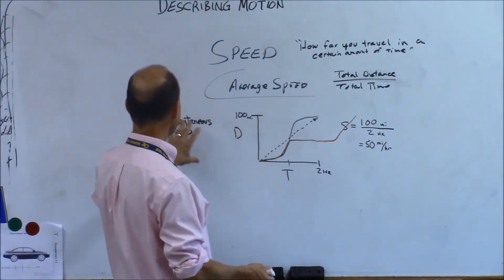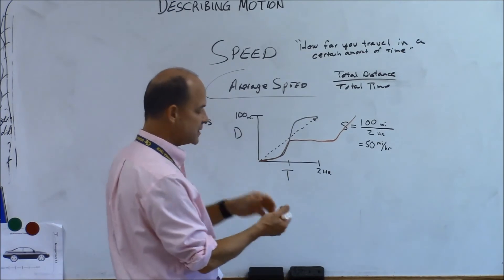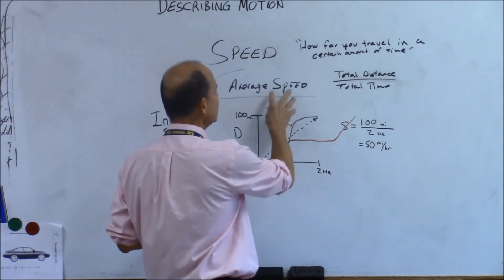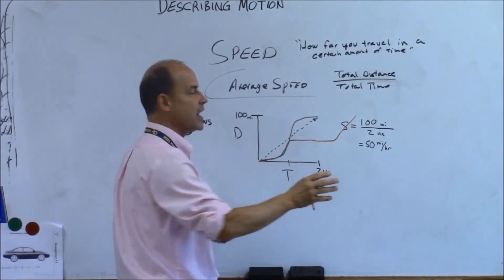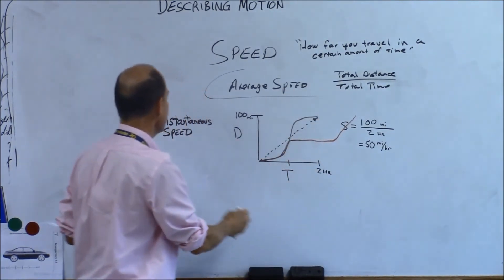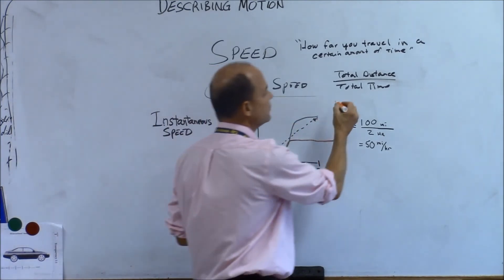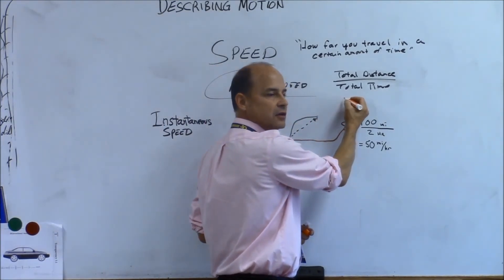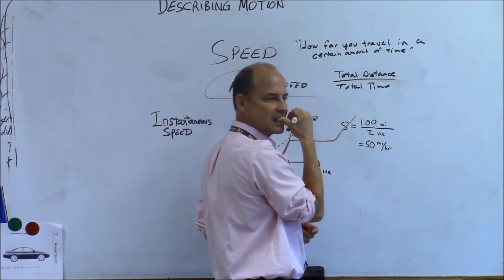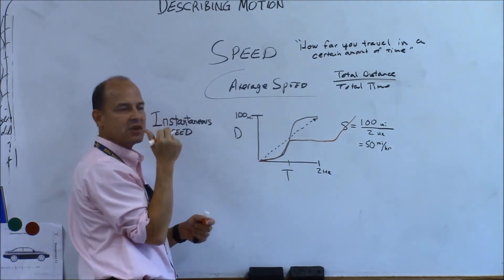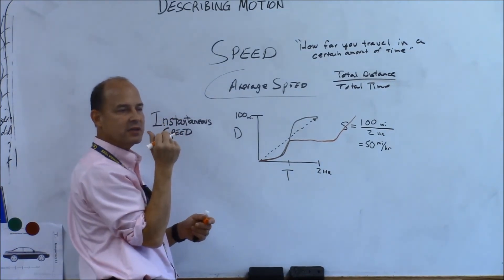So I've talked about average speed and instantaneous speed. Make sure you have in your notes that average speed is total distance over total time. What does your speedometer say in your car — is it your average speed or your instantaneous speed?